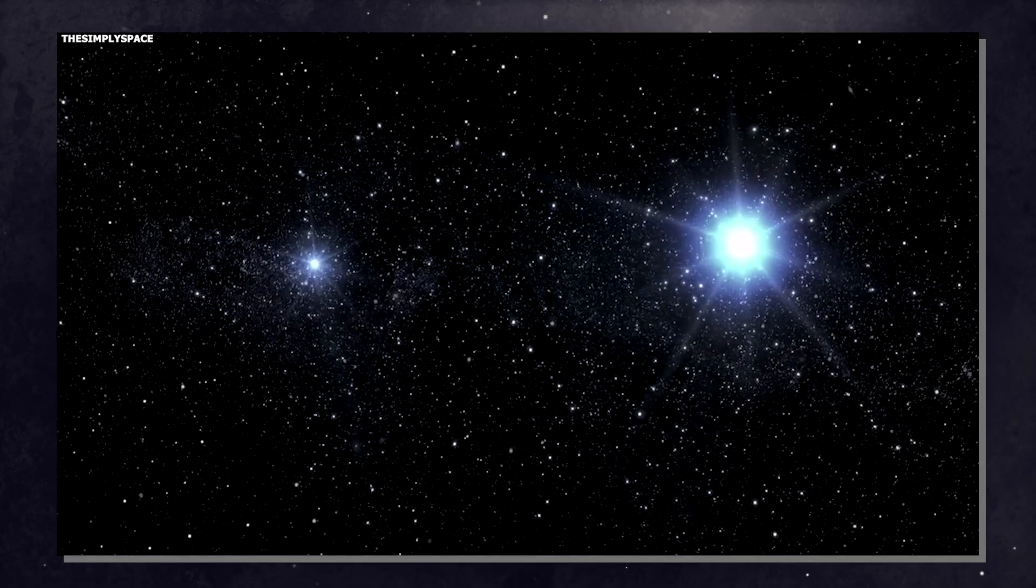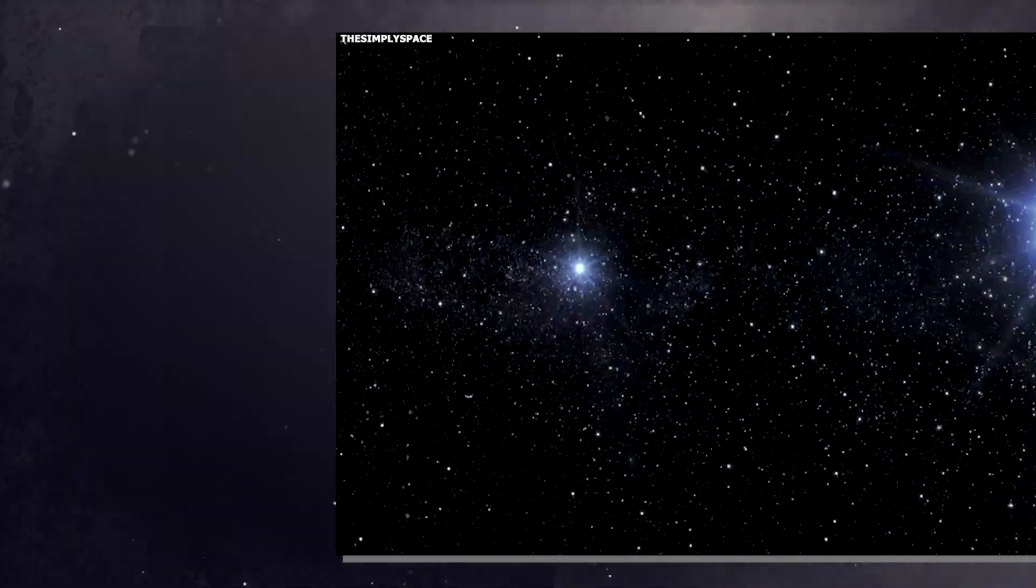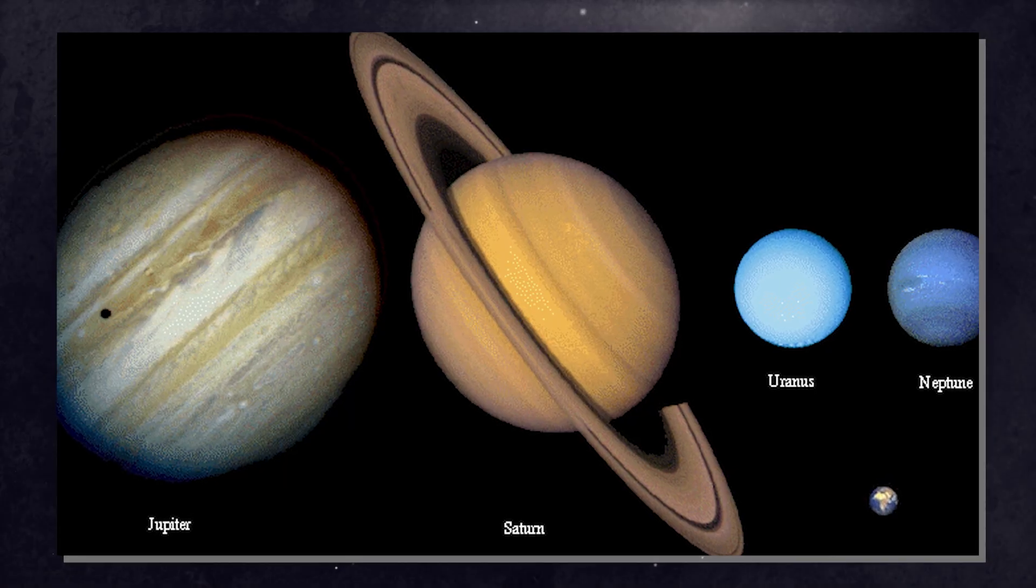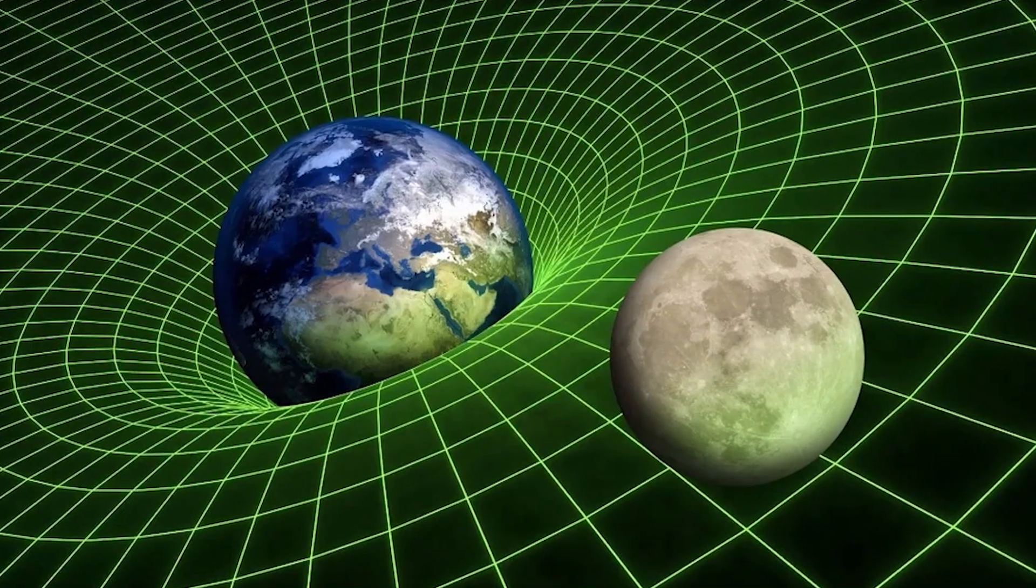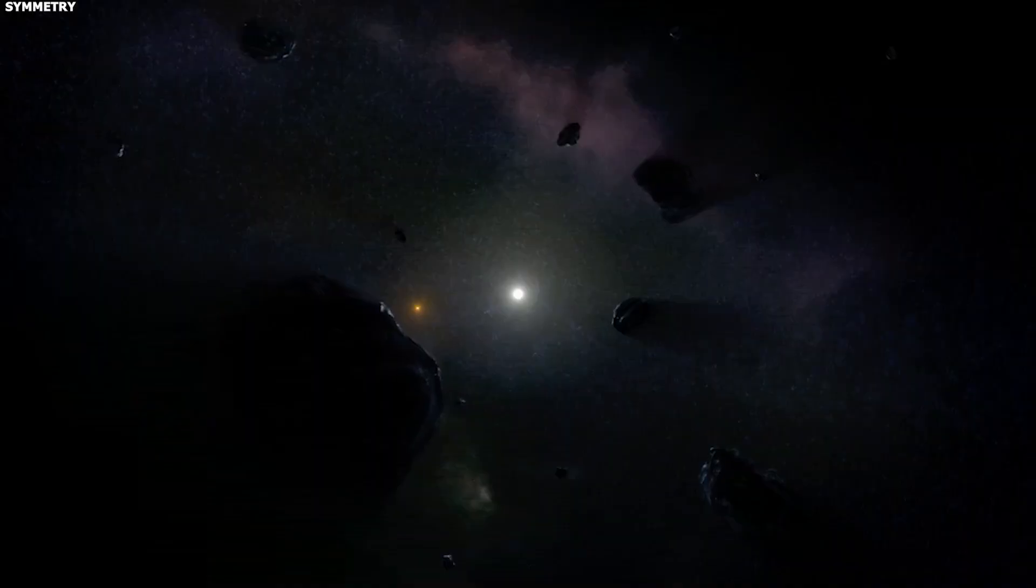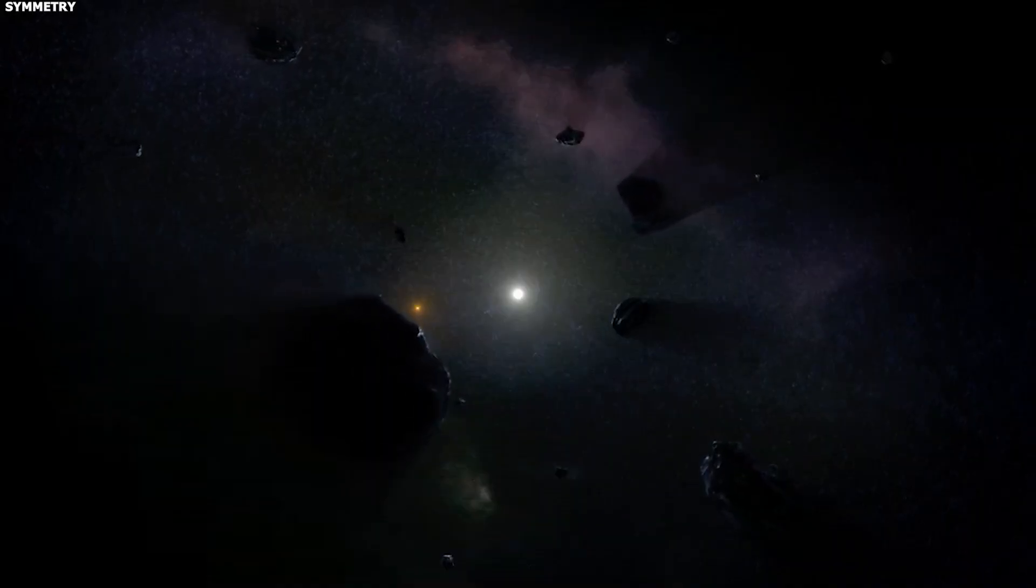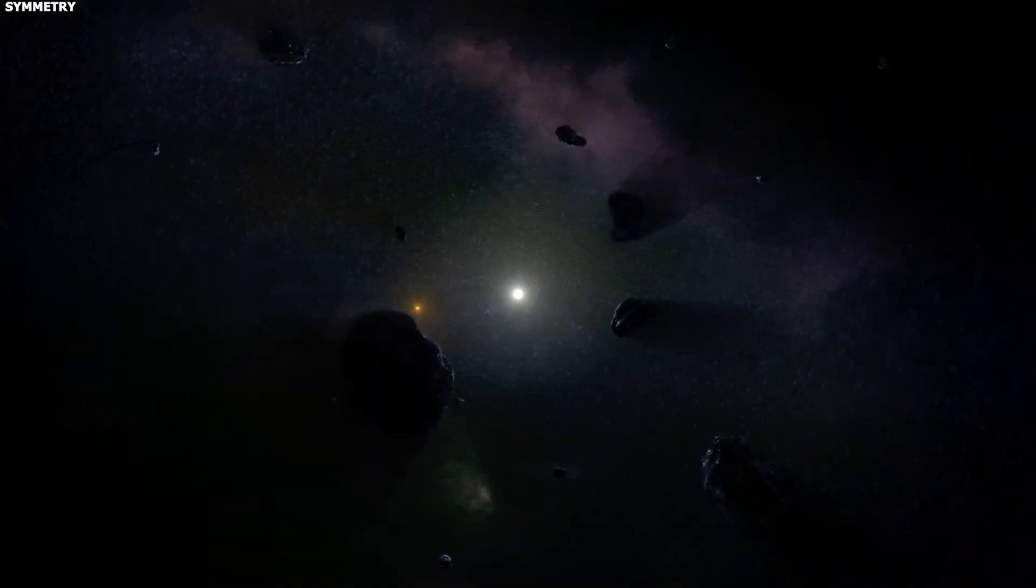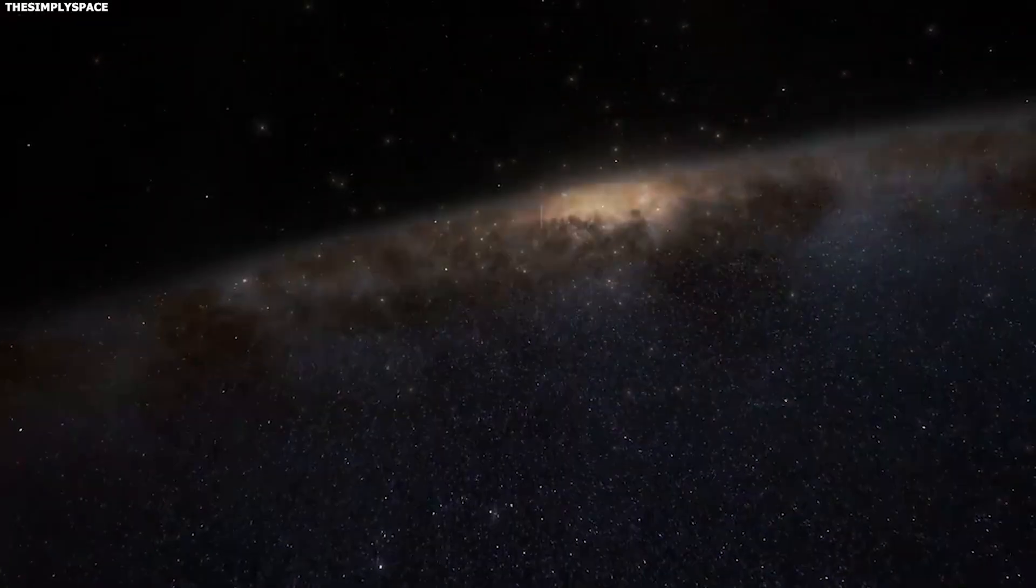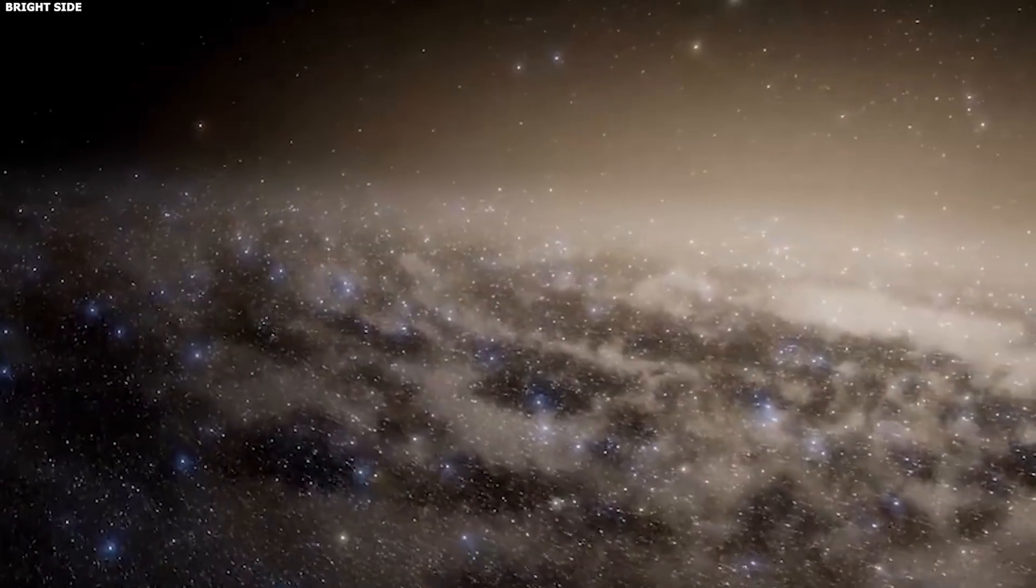Think about what came from the last big crisis in physics. When Mercury's orbit didn't make sense and scientists were forced to rethink gravity, they didn't just solve the Mercury problem. They unlocked general relativity. And general relativity gave us black holes, gravitational waves, the expanding universe. It completely transformed how we understand space, time, and reality itself.